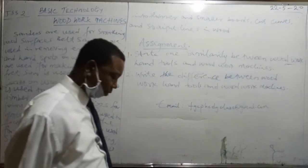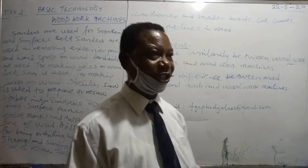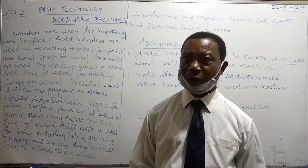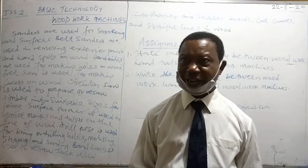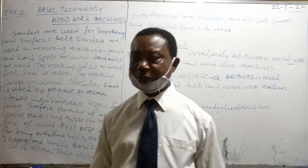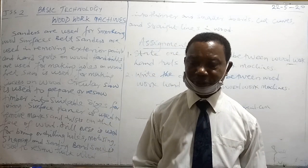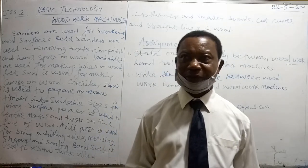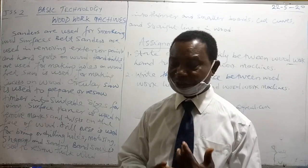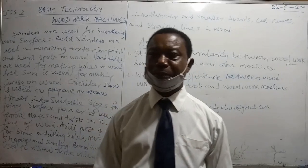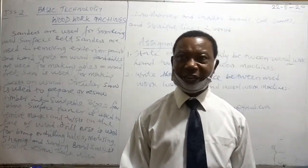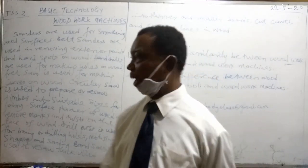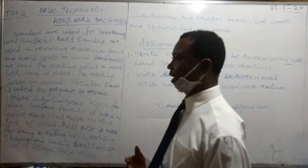Summarily, woodwork machines are the machines we use to work on woodwork projects. They have two classes: portable and fixed ones. Each of them has common characteristics — the presence of electric motors and switches, as well as being powered by electrical energy, concerning the applications that have been listed above.